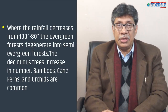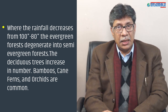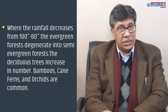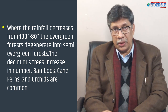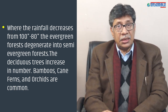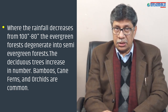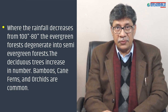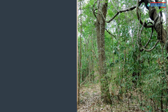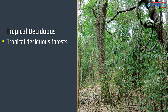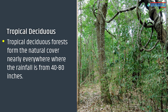Where rainfall decreases from 100 inches to 80 inches, the evergreen forests degenerate into semi-evergreen forests, where deciduous trees increase in number and bamboos, canes, ferns, and orchids remain common. The tropical deciduous forests form the natural cover nearly everywhere where the rainfall is from 40 to 80 inches.